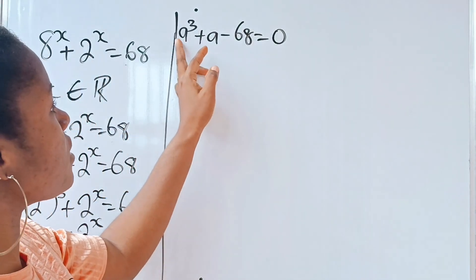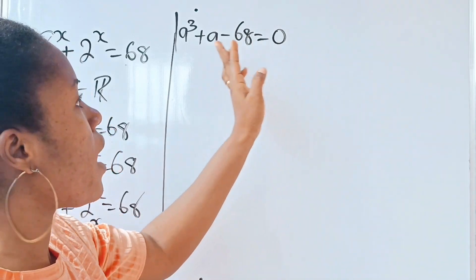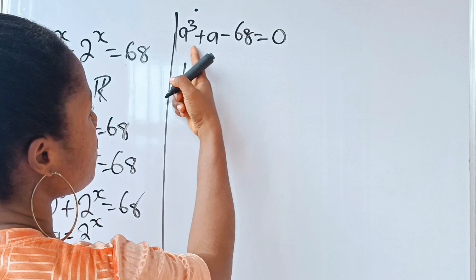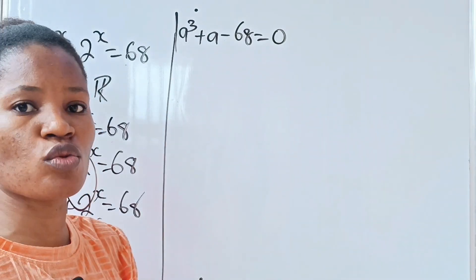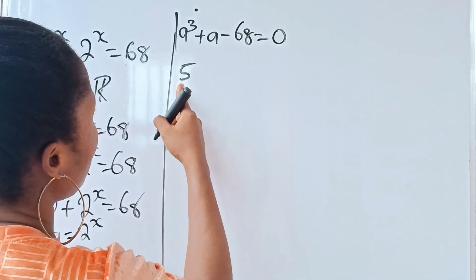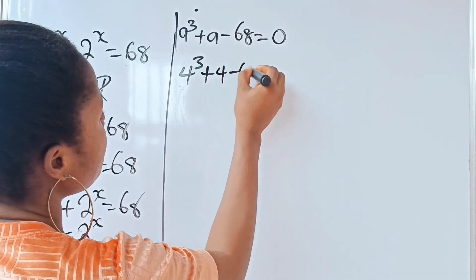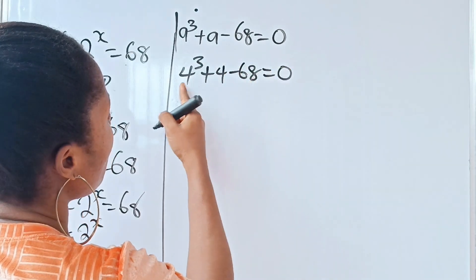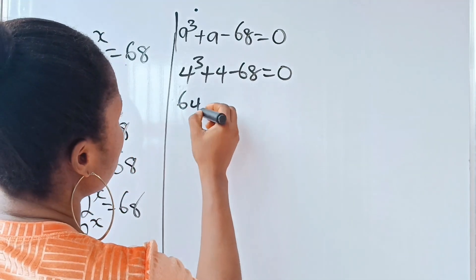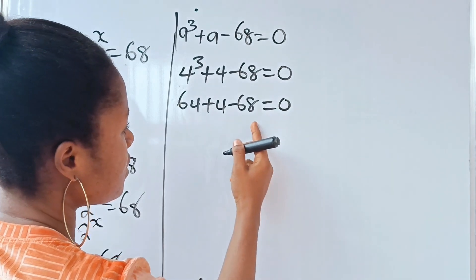To do that, I need a factor that will make this statement true. If a equals 1 or 2, it won't work. But if a equals 4: 4 to the power of 3 plus 4 minus 68 equals 0. And 4 to the power of 3 is 64, so 64 plus 4 minus 68 equals 0. That is true, so a equals 4 is a root.